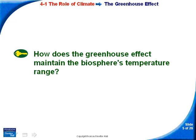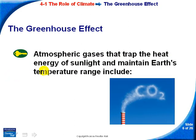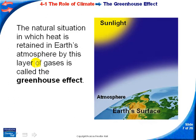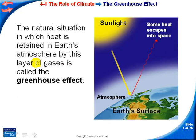How does the greenhouse effect maintain the biosphere's temperature range? The greenhouse effect traps the heat energy of sunlight, which maintains the Earth's temperature range. One of the key gases trapped is carbon dioxide — shown here coming out of a smokestack — reinforcing that a lot of CO₂ is made by human activity. Other gases include methane and water vapor. Sunlight hits the Earth, bounces off the surface into the atmosphere, where some escapes and some is trapped by carbon dioxide, methane, and water vapor. This is the greenhouse effect.